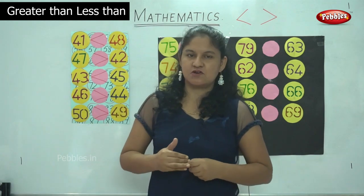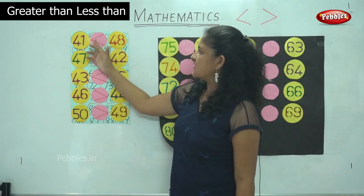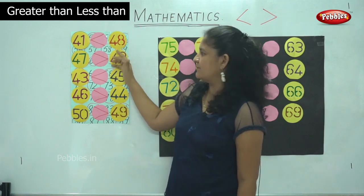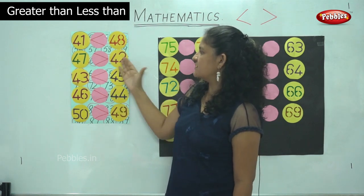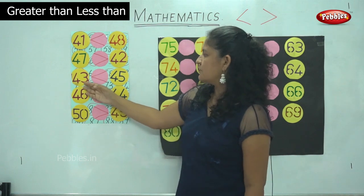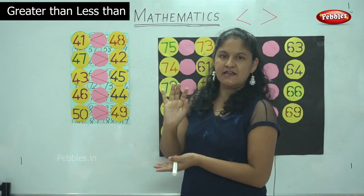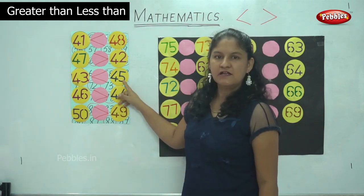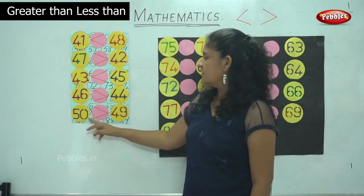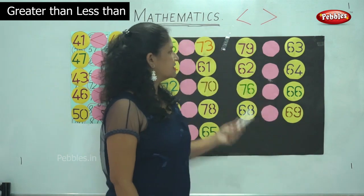I hope you have understood this concept of greater and smaller. To review: 41 is lesser than 48, so the mouth opens towards the bigger number. 47 is greater than 42, and 43 is lesser than 45, so the mouth of the alligator opens towards the bigger number. 46 is greater than 44, and 50 is greater than 49.